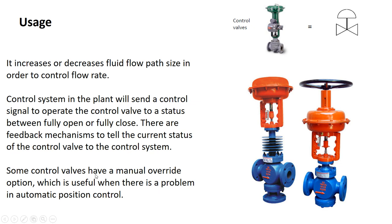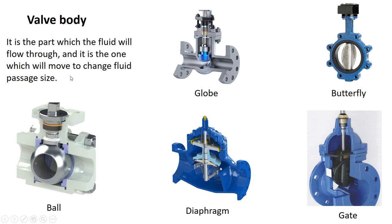Some control valves have a manual override option, which is useful when there is a problem in automatic positional control. This is a manual override switch or controller — basically used when your control valve accepts signals but doesn't work due to any malfunction. You use this to fully open or fully close the valve.